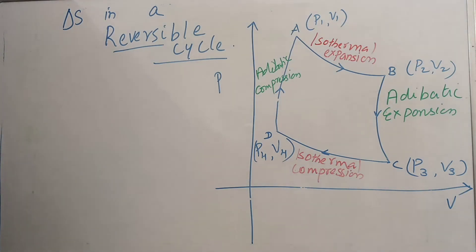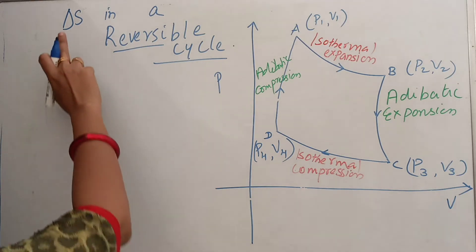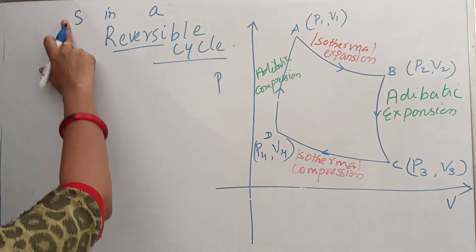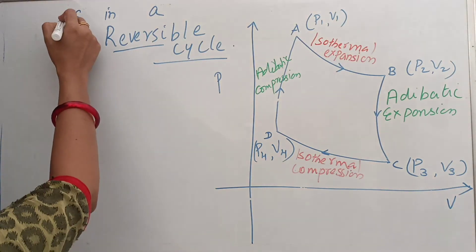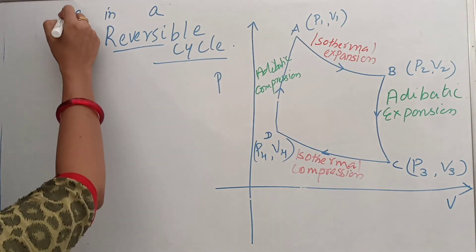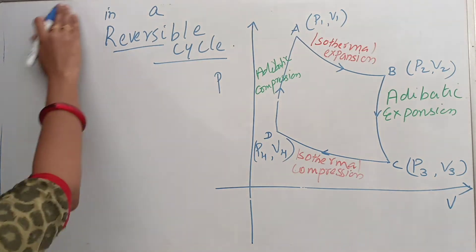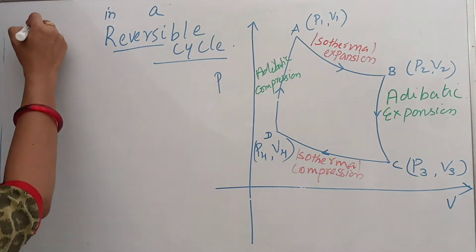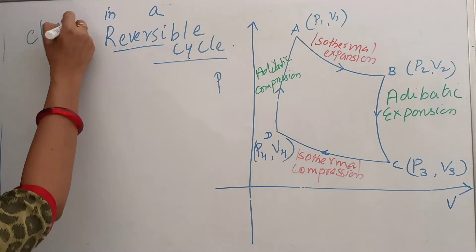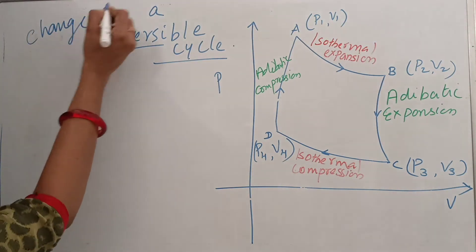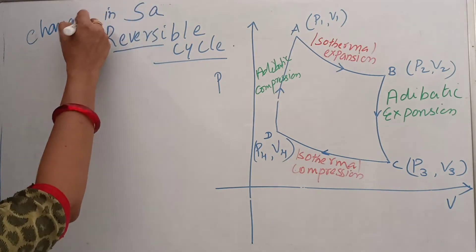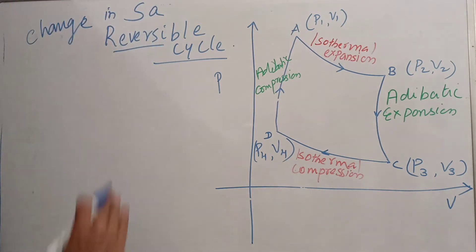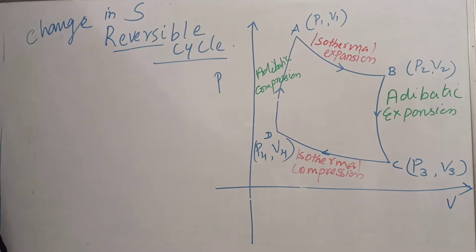Now, what we are going to study is the change in entropy — delta S — in a reversible cycle.